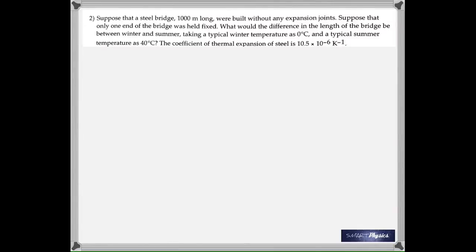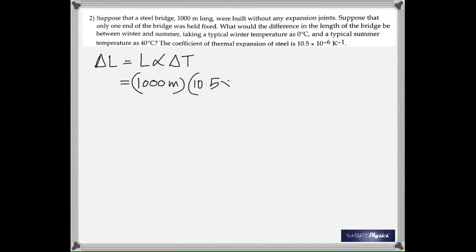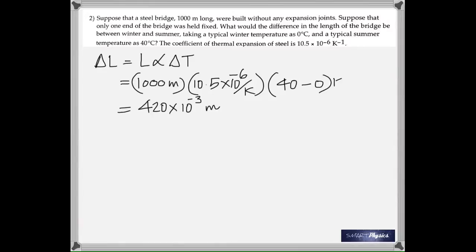In the second question, a steel bridge is 1000 meters long and the temperature changes from 0 to 40 degrees Celsius. The coefficient of thermal expansion alpha is given and you have to find the change in length, using delta L = L × alpha × delta T. Substituting the numbers gives 420 × 10⁻³ meters, which is 0.42 meters.